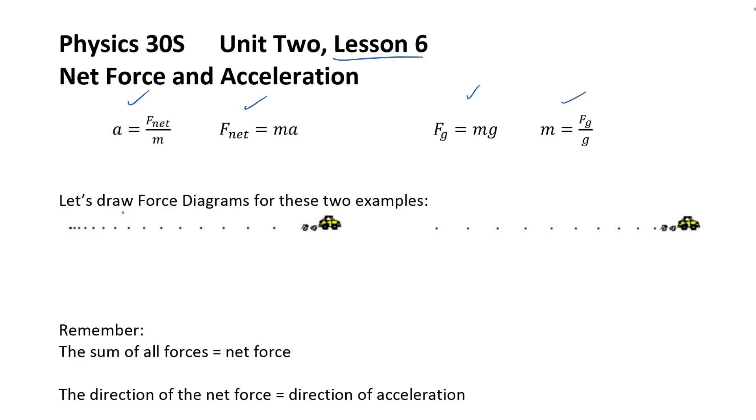It says let's draw force diagrams for these two examples. Well it seems to me for the first one there's this car that is starting from rest and then speeding up right. So it's moving to the right and speeding up to the right. I'm not sure about all the forces but I know that the F net, the sum of all the forces, is going to be to the right.